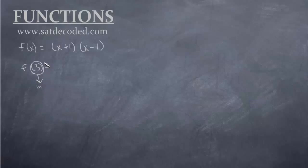So what do we do with inputs? Well we put it wherever we see an x because the 3 is replacing the x. So f of 3 equals 3 plus 1 times 3 minus 1 which equals 4 times 2 which equals 8. So 8 is what came out when we calculated our machine. So 8 is known as an output.